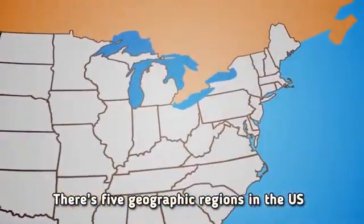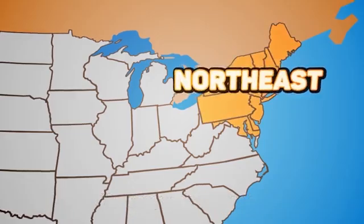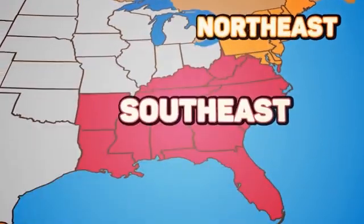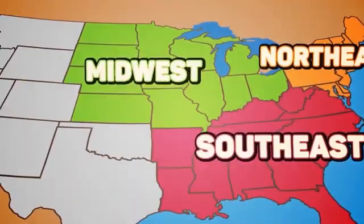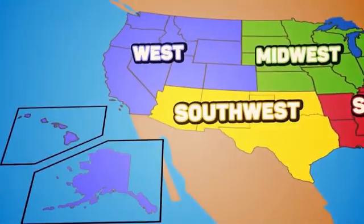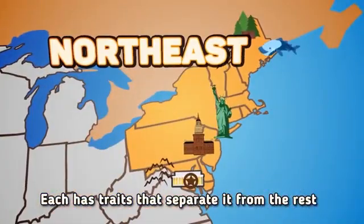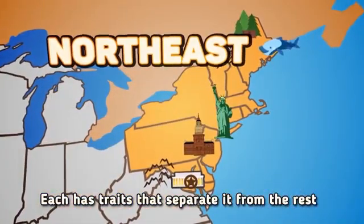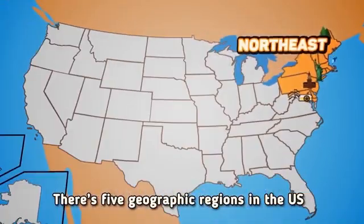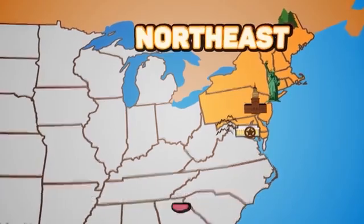Four different seasons with cold winter seas. There's five geographic regions in the U.S.: Northeast, Southeast, Midwest, Southwest, and the West. Each has traits that separate it from the rest.